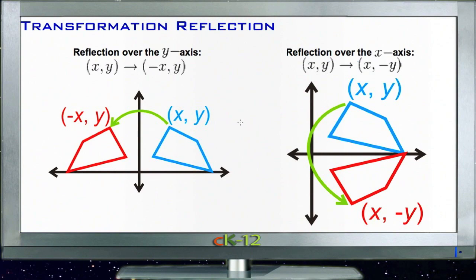Let's talk about reflection. Reflection is taking a given figure—in this case, a quadrilateral—and reflecting it over a specific line. In our first example, we're reflecting over the y-axis.